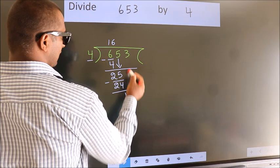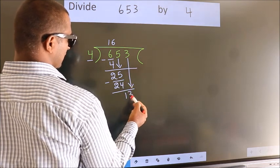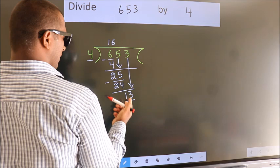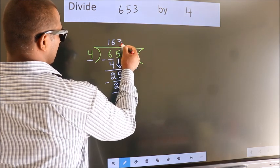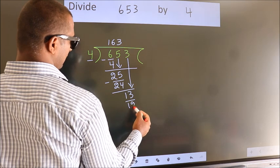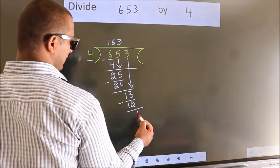After this, bring down the beside number. So, 3 down. So, 13. A number close to 13 in 4 table is 4, 3 is 12. Now, we subtract. We get 1.